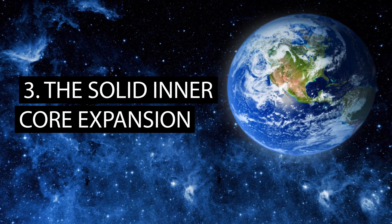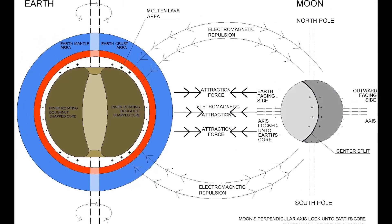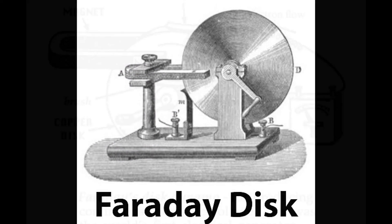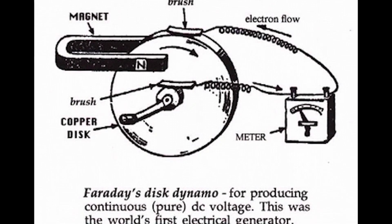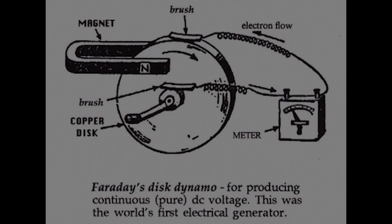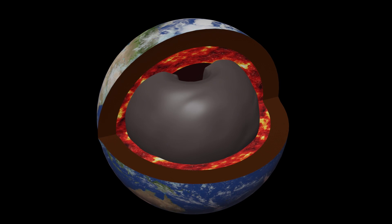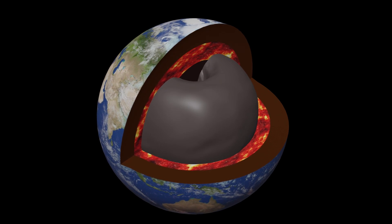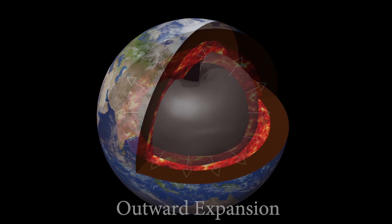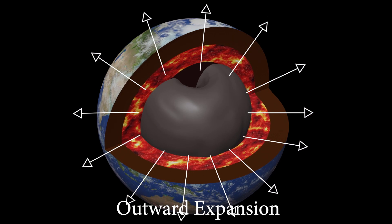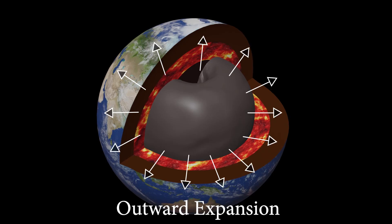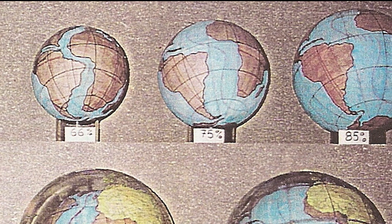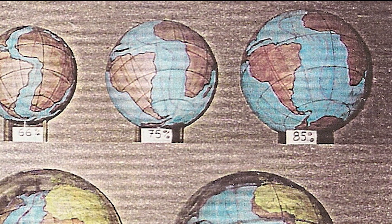Factor 3: The Solid Inner Core Expansion. The inner core spins at a higher rate than the shell or mantle due to the Faraday homopolar generator effect on the structure of the planet. Details on the homopolar generator effect are in the first episode of this series, linked in the description. The inner solid core goes through an inflation and expansion effect due to the centrifugal force of spinning. As the inner solid core is enlarged, it pushes outward on the outer layers, the lava area, and the shell or mantle.